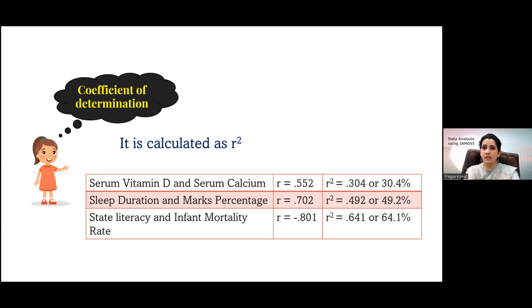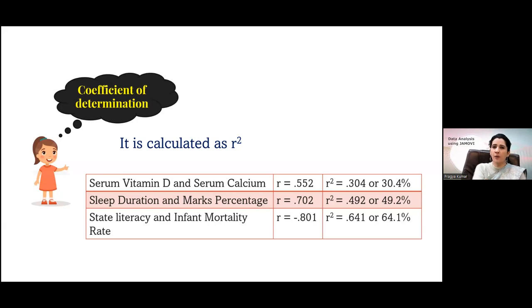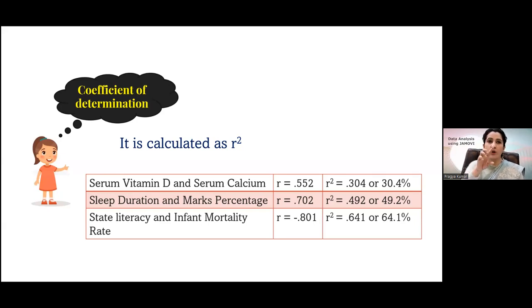Regarding whether both variables need the same number of values: paired observations should come from the same individual. If there are missing values, only those individuals with both paired values will be taken. For example, if you have calcium levels for 49 people and vitamin D levels for 50 people, it will take only 49 complete pairs.